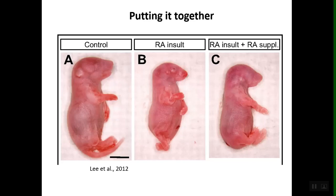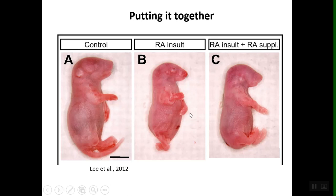To put it all together: in this mouse study, we have a control with low RA around the embryo. As stated before, if there's not much RA, abnormal development occurs. Researchers then added RA, and normal development was restored at the stage where RA is used to segment the body plan. RA levels come back up, CYP26A1 begins working again, and a normal level of RA is maintained in the system, allowing normal development.